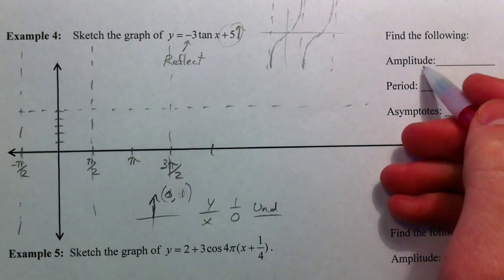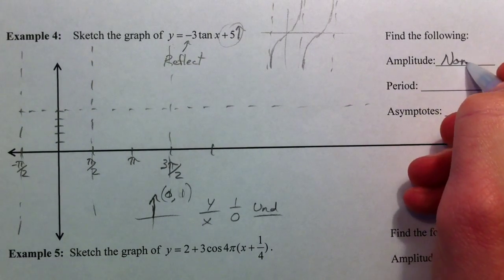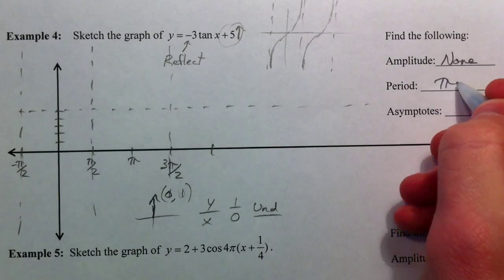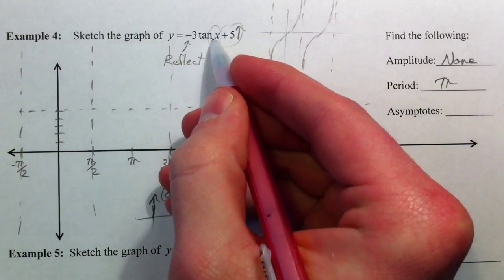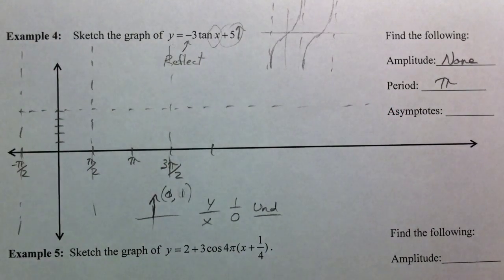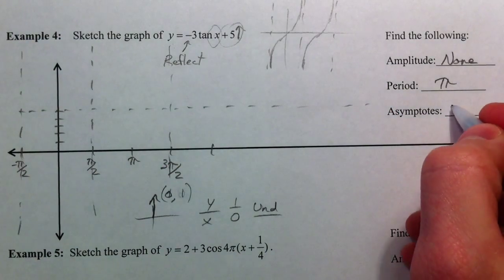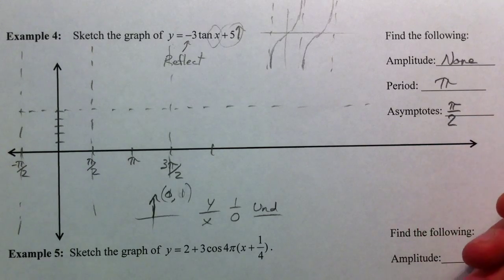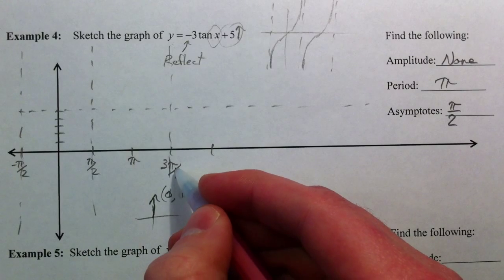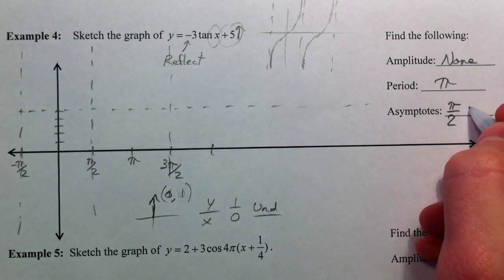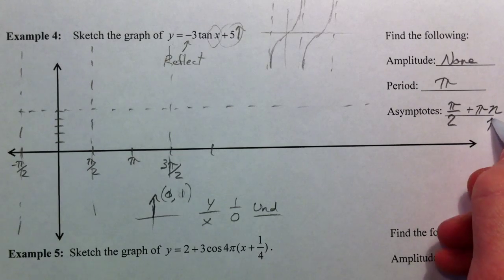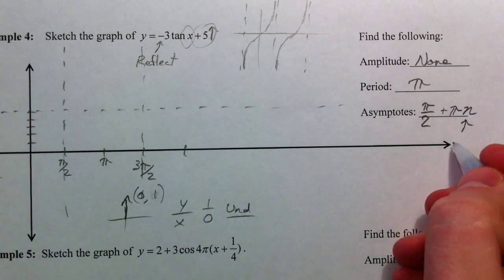The tangent graph does not have an amplitude because it's the distance away from 0. The period is still pi because it's unaffected by anything like that. The asymptotes are at pi over 2, and if I add another pi, I'll get to 3 pi over 2. So I'm just going to say plus pi times n, where n is some integer.